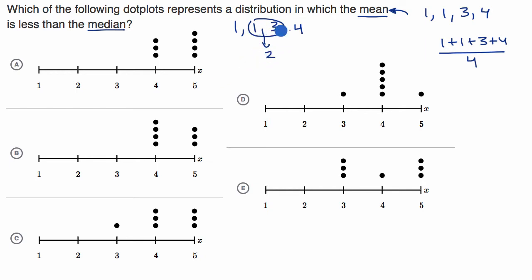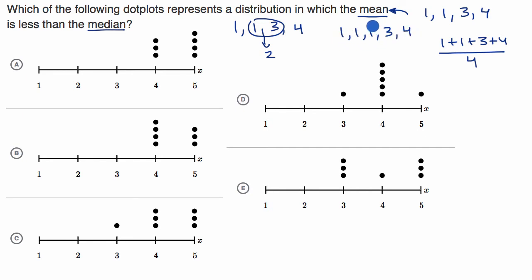If you had an odd number of numbers — say one, one, one, three, and four — then you have a very clear middle number. You order the numbers and the middle number is the median. So with that out of the way, let's think about the mean and median for these dot plots. We should be able to do it without a lot of computation.